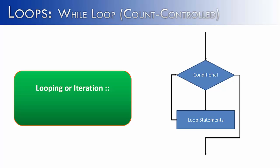A common practice in programming is to repeat a process, and this is called either looping or the more technical name, iteration. I've created a flow chart on the right to show what a loop would look like. Starting inside a program, we eventually reach a conditional. If the statement is true, we go inside the loop, execute the statement, then go back to the conditional and check again, until it is false and we continue on with the code following the loop.